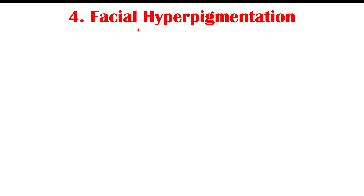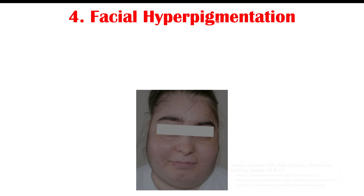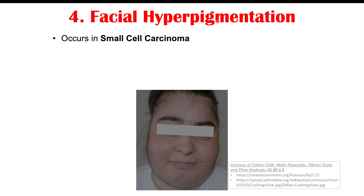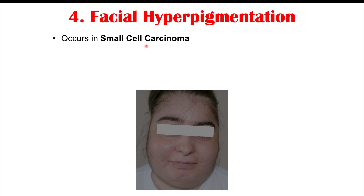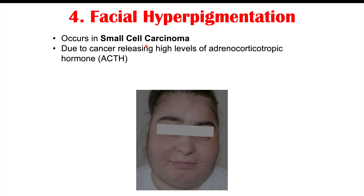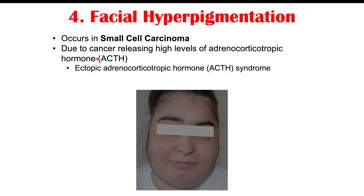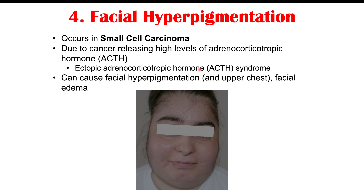Another facial finding is facial hyperpigmentation, which can occur in small cell carcinoma. The cancer releases high levels of adrenocorticotropic hormone (ACTH), leading to ectopic ACTH syndrome. This causes increased darkness of skin coloration on the face and can also occur on the upper chest. Facial edema — swelling of the face — can also occur.